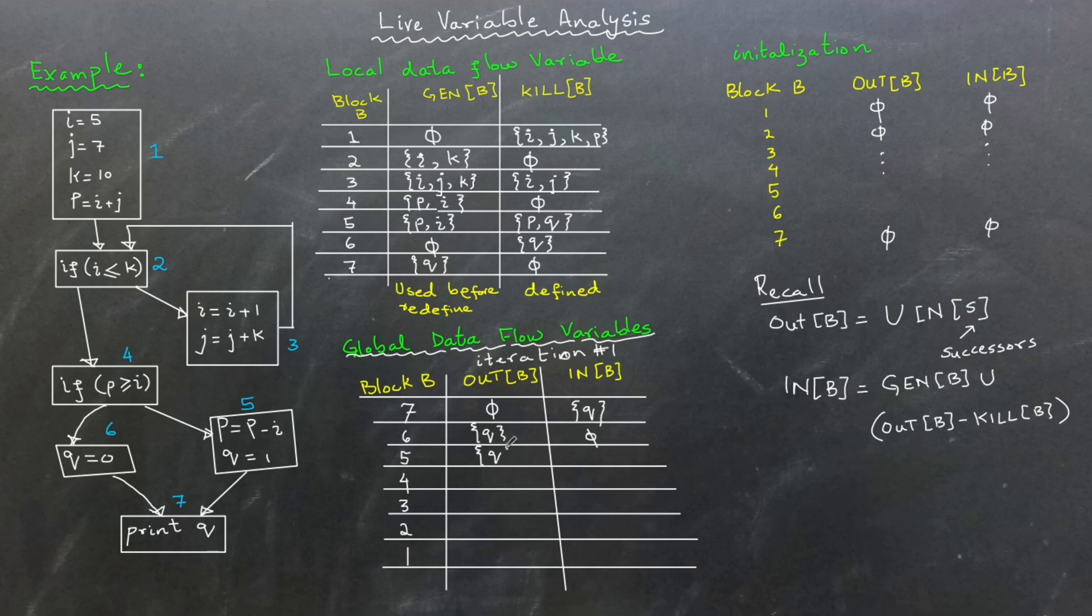For block 5, out 5 contains q which comes from in 7 of a successor. In 5 is calculated as the union of gen 5 which includes p and i and the difference between out 5 and kill 5. Since out 5 contains q and kill 5 contains p and q, the set difference out 5 minus kill 5 result in an empty set. Therefore, in 5 contains p and i only.